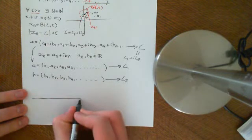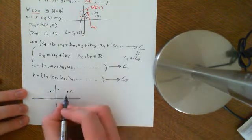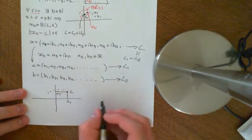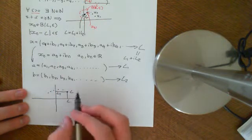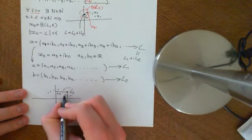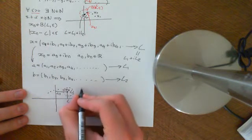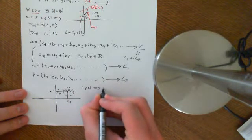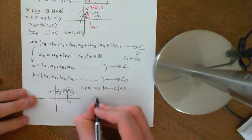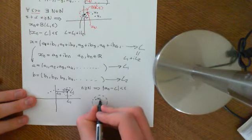A picture is very helpful here. We have our sequence of complex numbers converging to some limit L, where L is made up of a real part L1 and imaginary part L2. Each term is also made up of real and imaginary parts. Because this sequence converges in the complex numbers, what we are given is that if you give me any open ball of whatever radius around L, I can find a point in the sequence — some x_N — which is within that open ball, i.e., if little n ≥ big N, then |x_n - L| < ε.